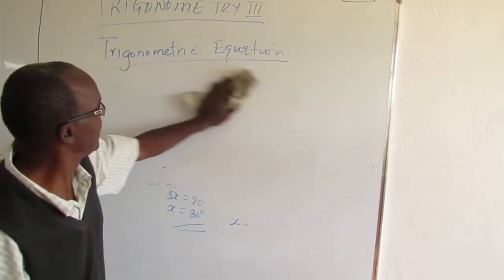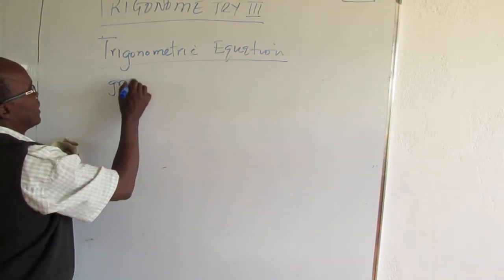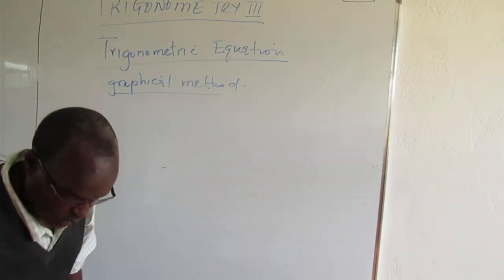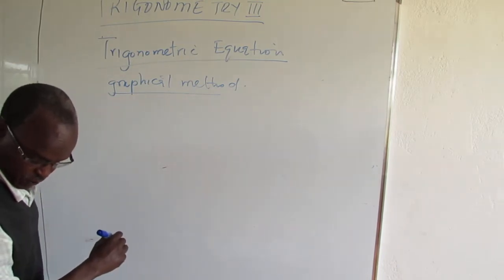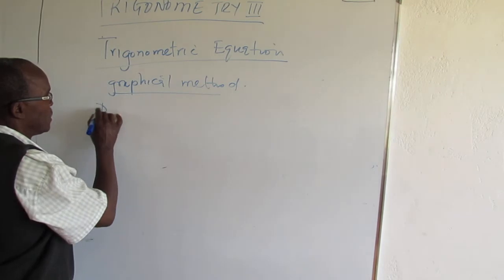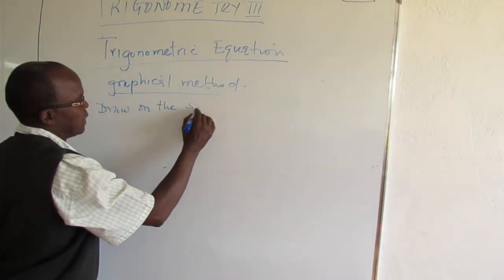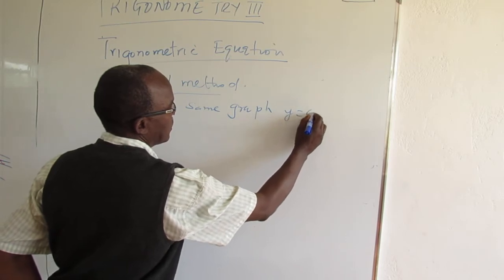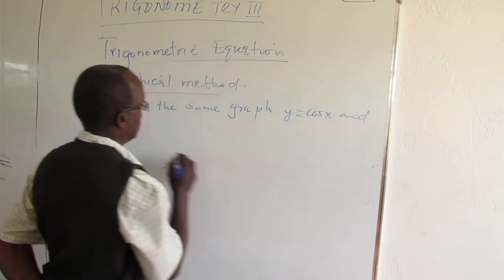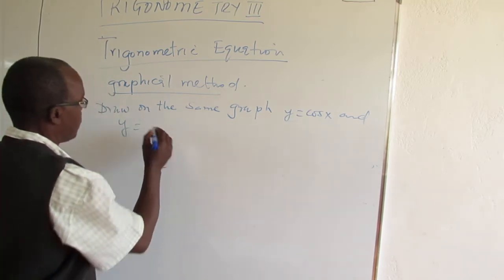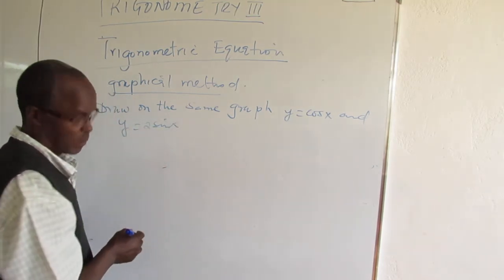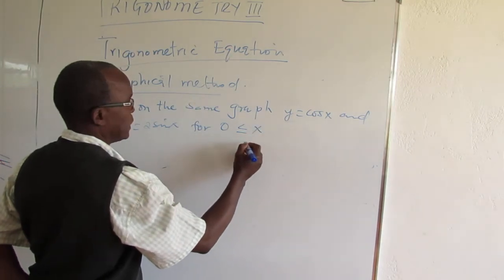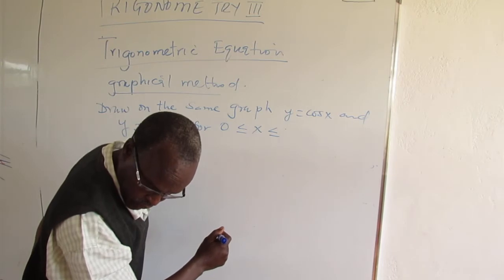You can do this graphically. Graphical method. You can draw on the same graph y equals cos x and y equals 2 sin x for x between 0 and 360 degrees.